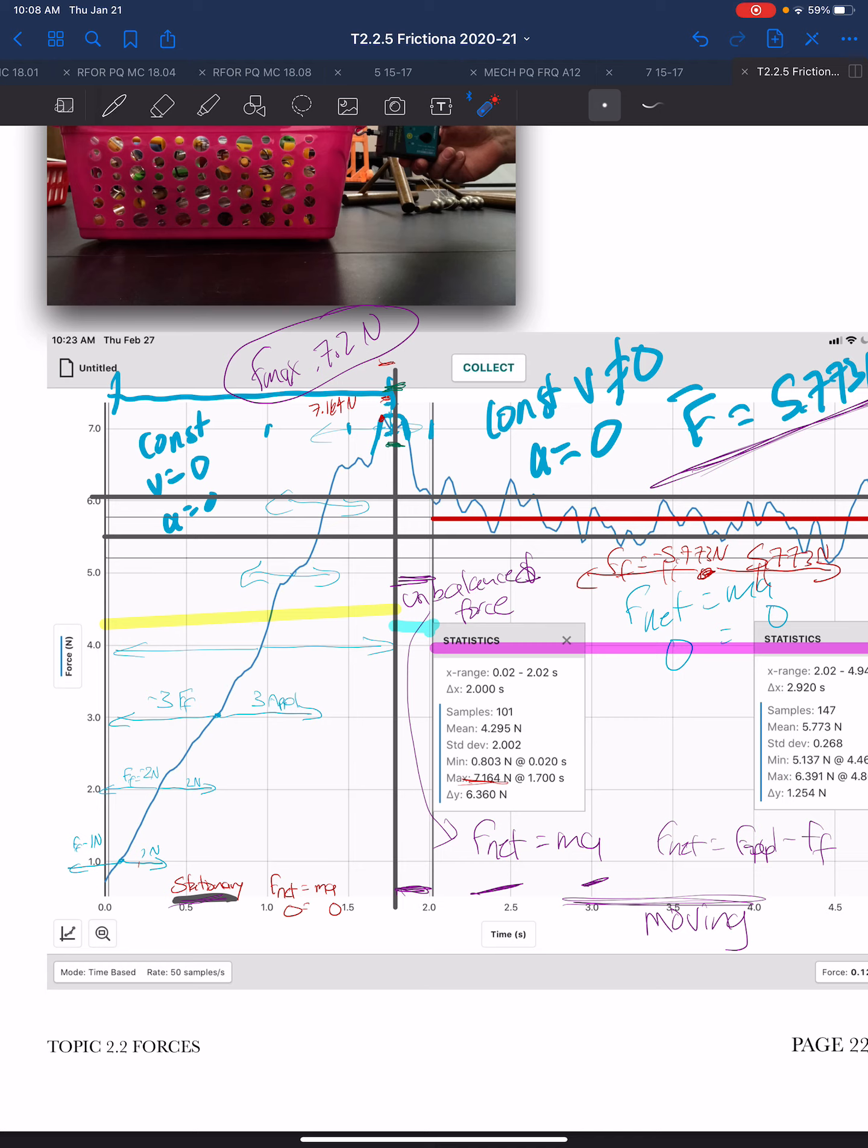What we saw as the force applied increased, the force of friction increased, until the force applied was greater than the force of friction. We are focused here on what's happening during this stationary phase.